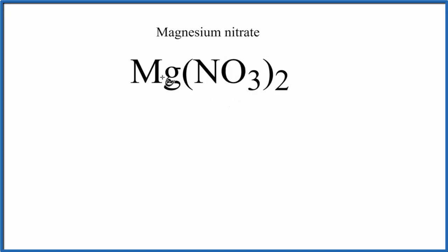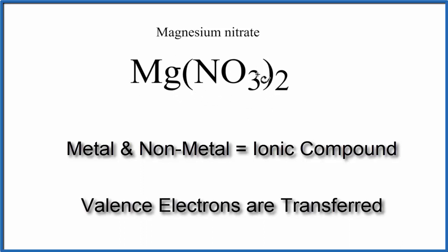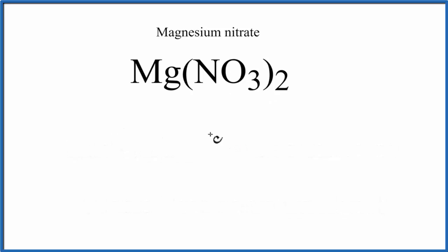So we have our Mg and then we have two of these NO3's here. Because we have a metal and non-metals, we have an ionic compound. In ionic compounds, the metal will transfer electrons to the non-metals. So let's write Mg and we'll put that in the center, and then we'll put NO3 on either side.